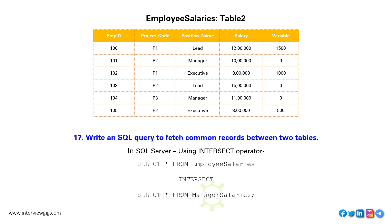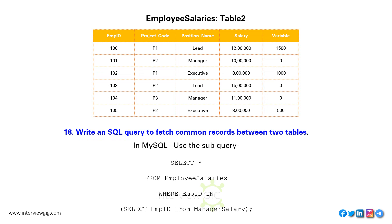Write an SQL query to fetch common records between two tables. In SQL Server, use the INTERSECT operator: SELECT * FROM employee_salaries INTERSECT SELECT * FROM manager_salaries. In MySQL, use a subquery: SELECT * FROM employee_salaries WHERE EMPID IN (SELECT EMPID FROM manager_salary).